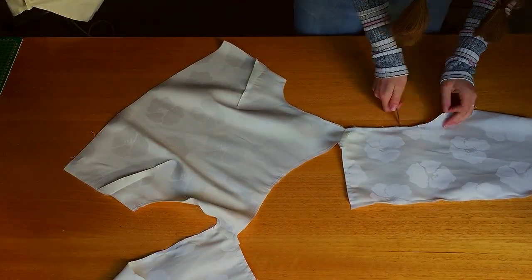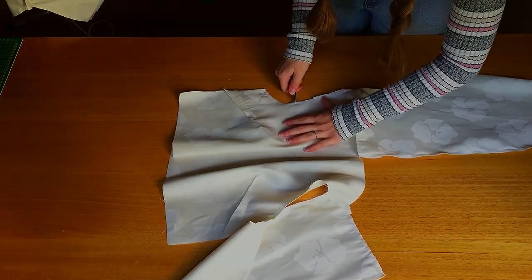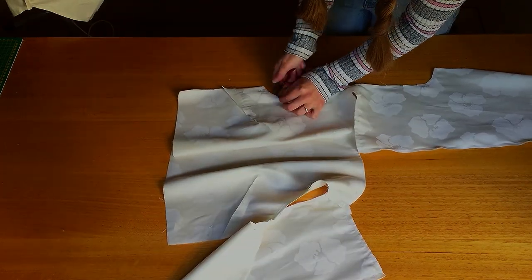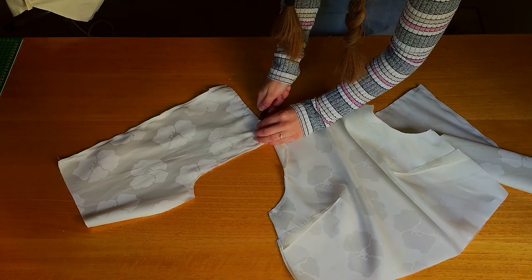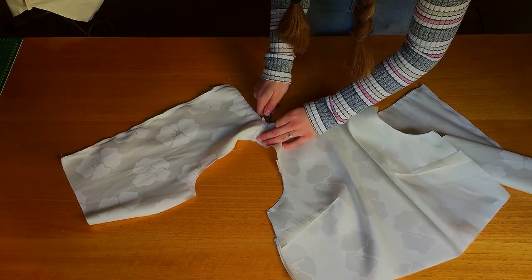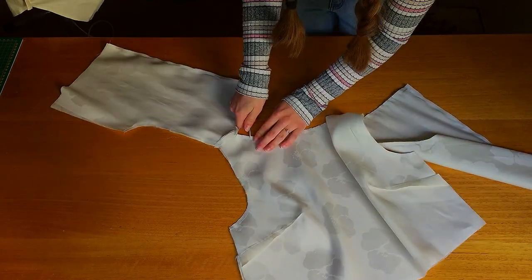After stitching, go ahead and clip the seam allowances wherever there's a bend in the stitching. This will stop the top stitching from puckering and also make a sharper edge. Make sure you clip as close as you can to the stitching line without clipping the stitching.